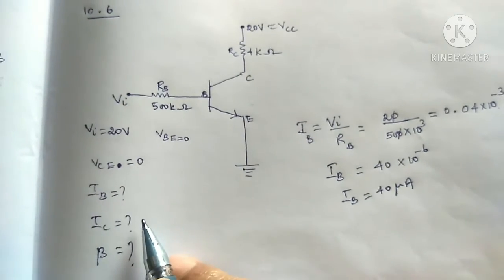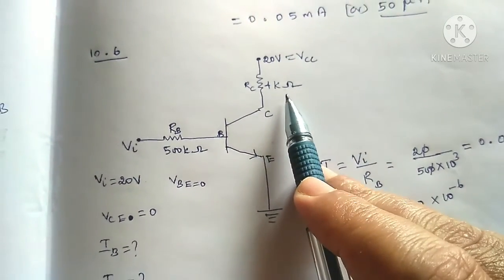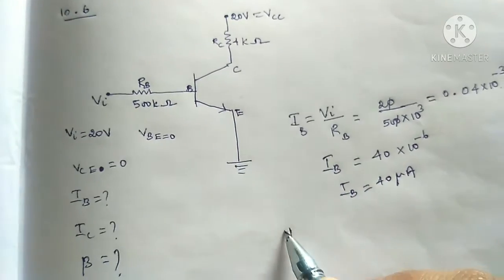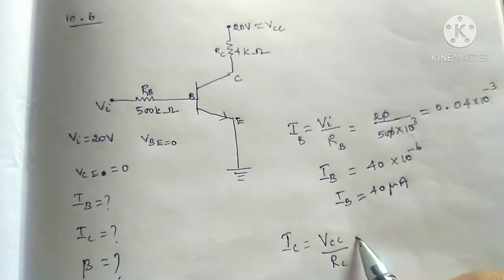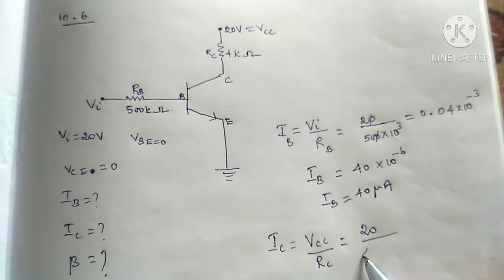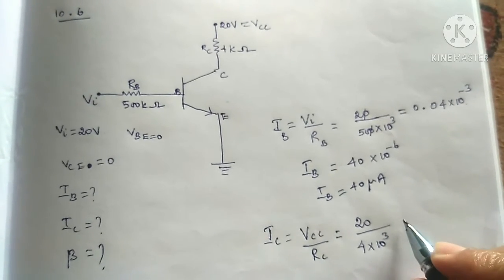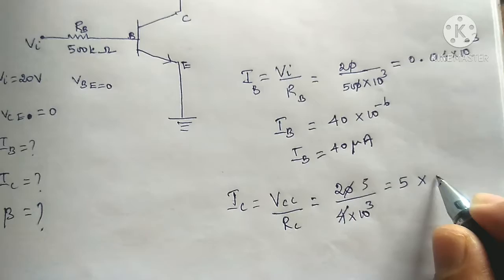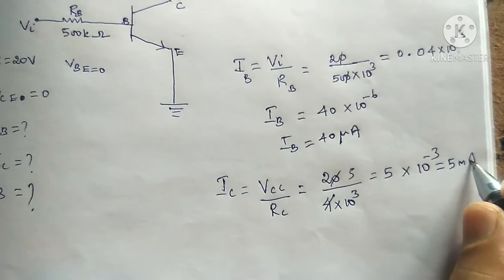IC output collector current, output voltage by output resistance. IC output voltage VCC, output resistance RC. VCC 20 and RC 4 kilo, 10 power 3. If cancel 5 times, 5 into 10 power minus 3, 5 milli ampere answer.